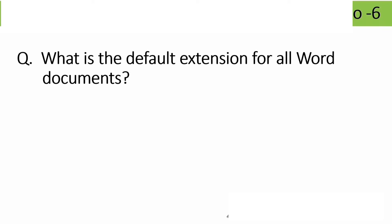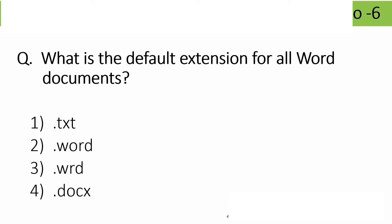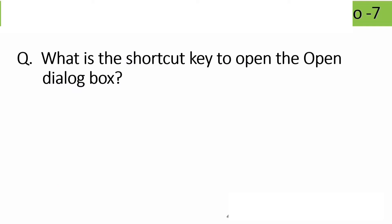What is the default extension for a Word document? Options: .txt, .word, .wrd, .docx. The correct answer is .docx — that is the default extension for a Word document.